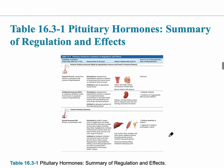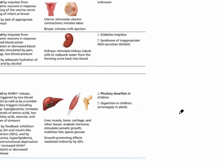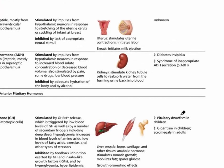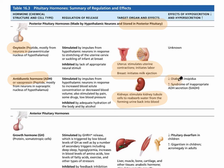This slide summarizes the regulation and effects of all pituitary hormones. For the posterior pituitary, remember the hormones are stored there — oxytocin and ADH — but not produced there. You should know what stimulates and inhibits them, the target glands, and the homeostatic imbalances. For example, low ADH is associated with diabetes insipidus.